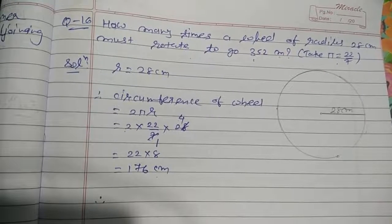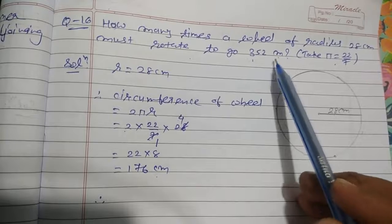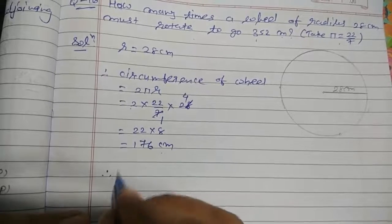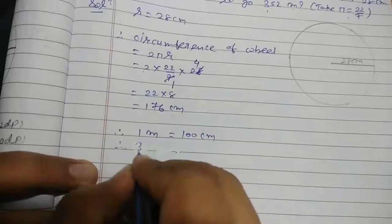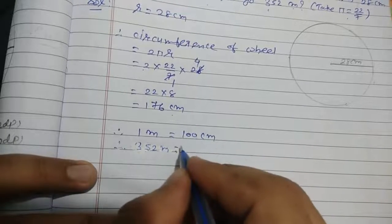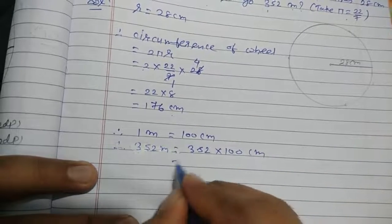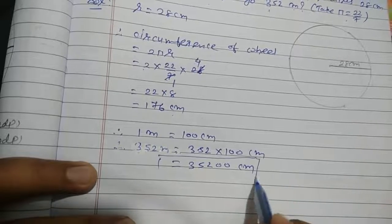The distance to be covered is 352 meters, but circumference is in centimeters, so units must be made equal. We convert 352 meters to centimeters: 1 meter = 100 centimeters, therefore 352 meters = 352 × 100 = 35200 centimeters.